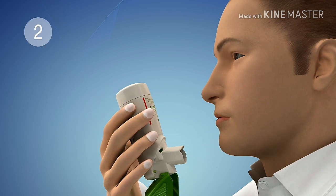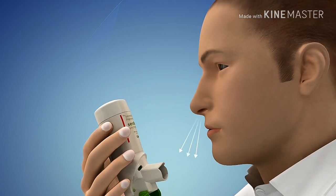Remove the SynchroBreathe inhaler from your mouth and hold your breath for 10 seconds or as long as is comfortable and then breathe out slowly.